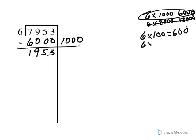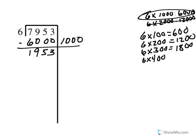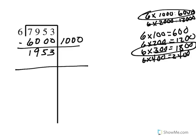I need to keep going. 6 times 200 is 1,200. 6 times 300 is 1,800. And 6 times 400 is 2,400. Now I cannot subtract 2,400 from 1,953, but I can subtract 1,800. So I want to subtract 300 groups of 6, which is 1,800. That gives me 3 minus 0 is 3, 5 minus 0 is 5, 9 minus 8 is 1, and 1 minus 1 is 0, leaving 153.